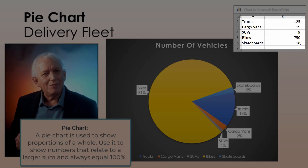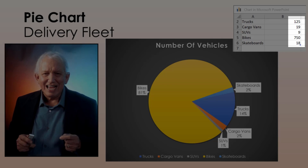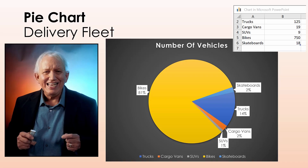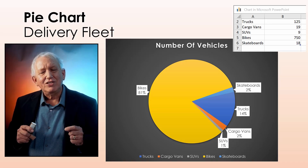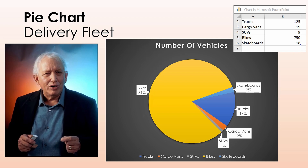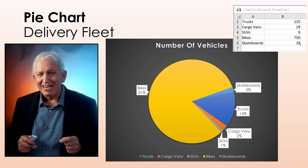The pie chart can only accommodate one series of data. In this example, it's the number of vehicles per category. It would not accommodate any other data, such as a second series of the total dollar value of our fleet. Multiple data series won't work in a pie chart, but in a few moments we'll see alternative charts that can handle that.